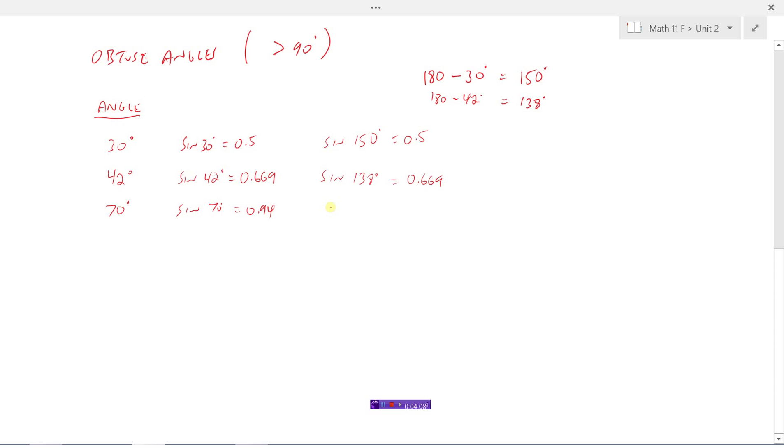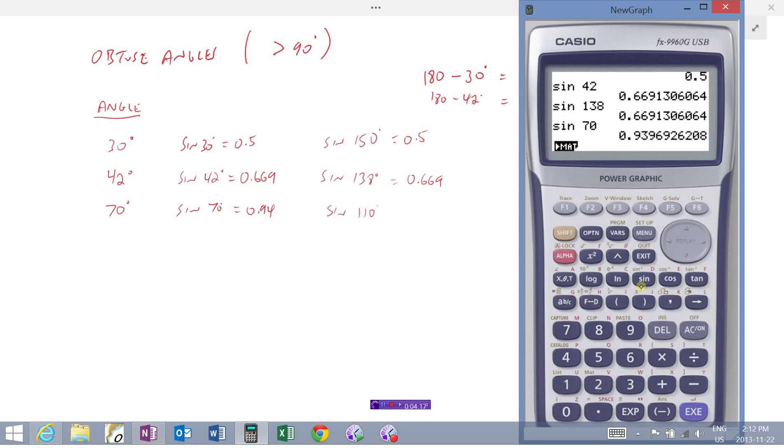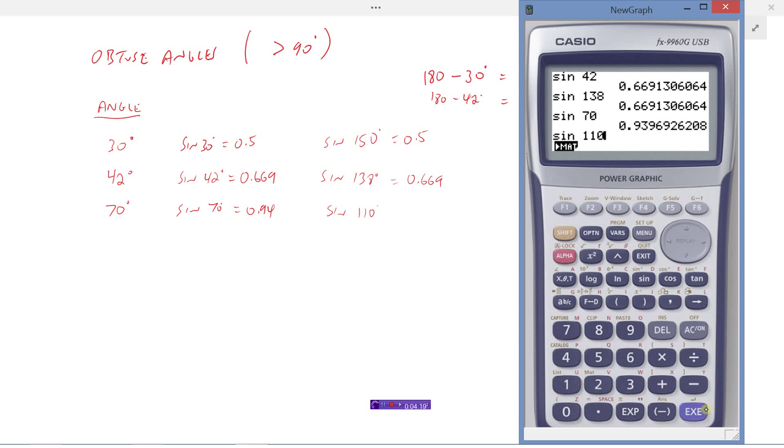And 180 minus 70 would give us the exact same ratio. So that should be 110 degrees. And sine 110, there's our same ratio again, 0.94.